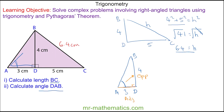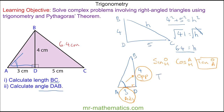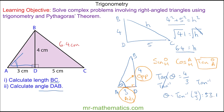To work out the angle we can use sine (opposite over hypotenuse), cos (adjacent over hypotenuse), or tan (opposite over adjacent). We're going to use tan because we have those two sides. So the tangent of theta is the opposite, which is 4, divided by the adjacent, which is 3. We'll take the inverse tan (arc tan) of both sides, and these will cancel. So theta is the arc tan of 4 over 3, which is 53.1 degrees.